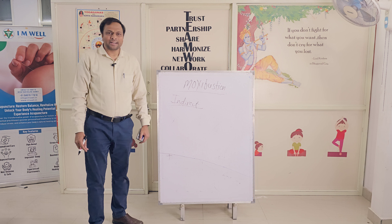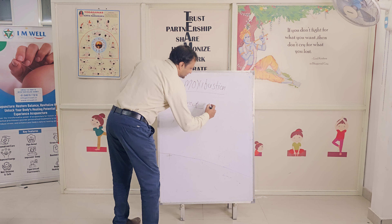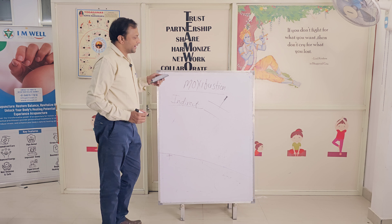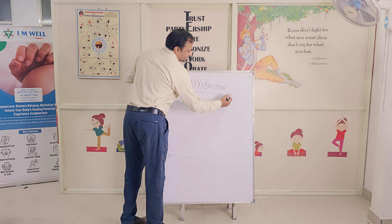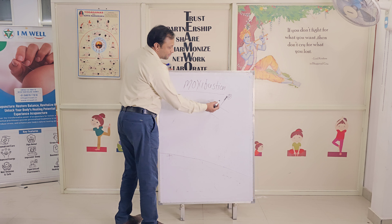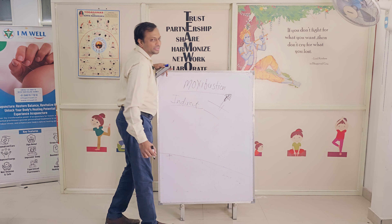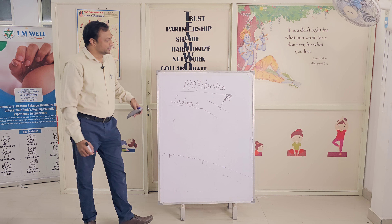Most commonly we use indirect moxibustion. In indirect moxibustion, the moxa is used on the needle. For example, on the skin surface where an acupuncture needle has been inserted, we use a piece of hot ginger or garlic, which acts like a moxa, or we place a moxa cone directly on the needle so that the heat is transmitted through the needle into the skin.